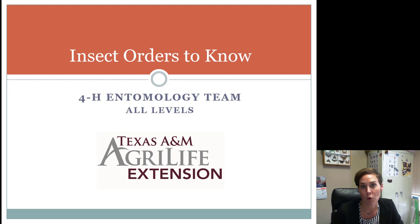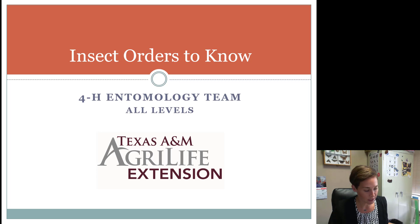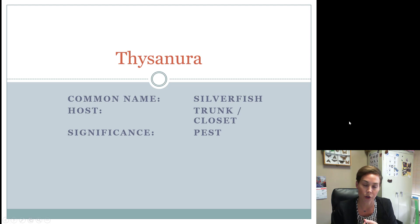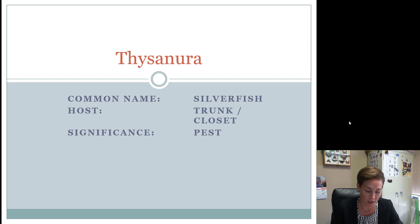We're going to start getting into some of the orders and specific species of insects you need to know. This video covers most of the insects on the first page — these are really primitive insects. They should all have chewing mouthparts and incomplete metamorphosis. For the contest, you need to know the order name, common name, where it's found, its significance (pest, beneficial, or inconsequential), and its type of lifecycle.